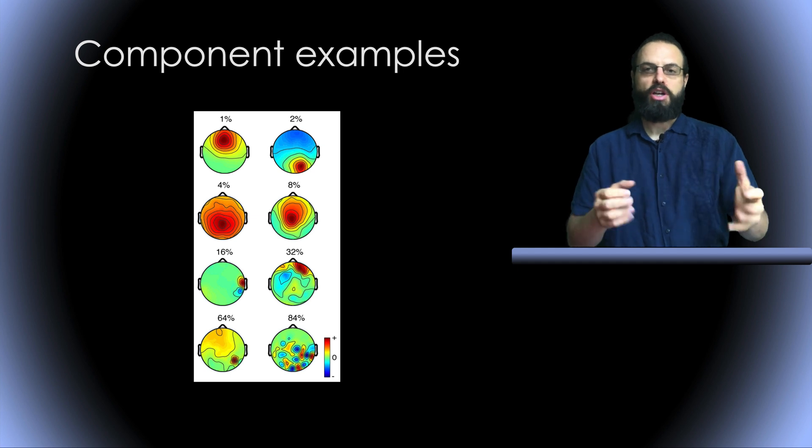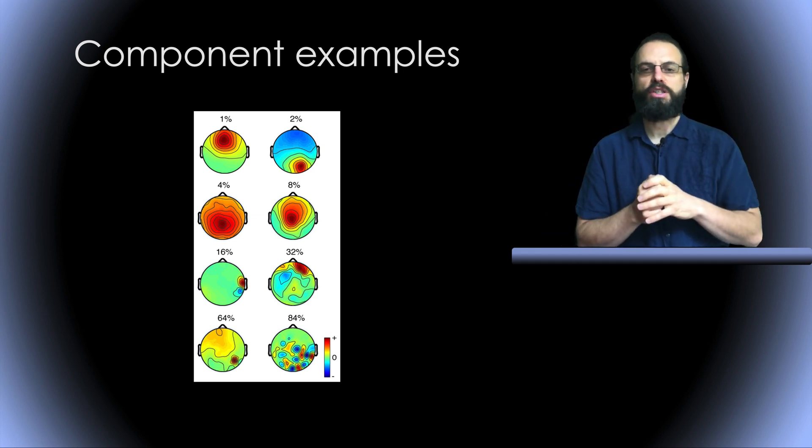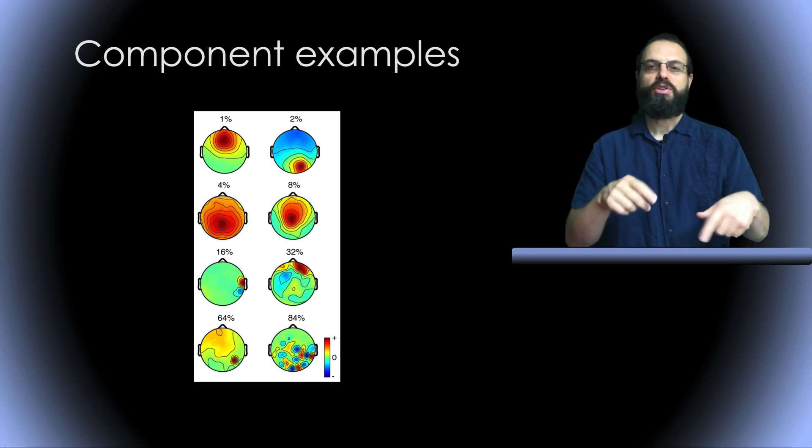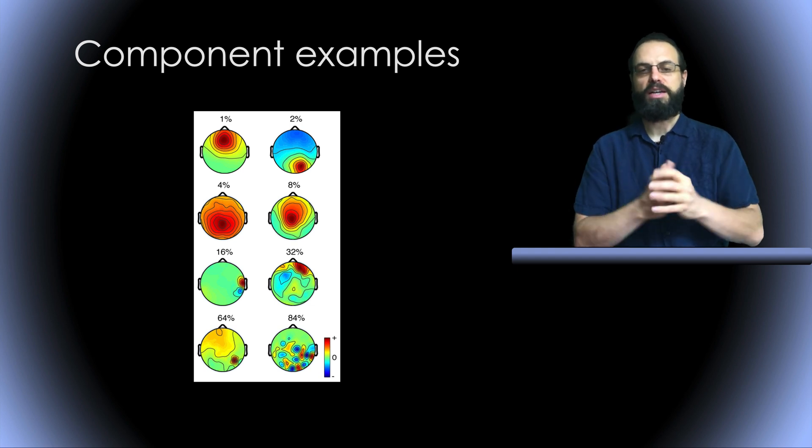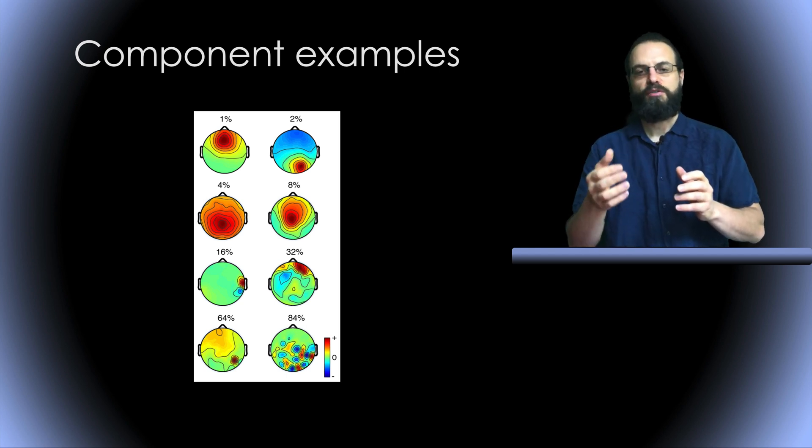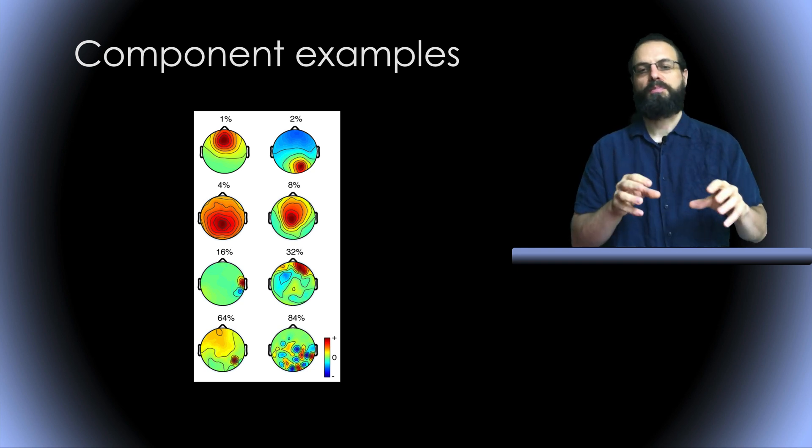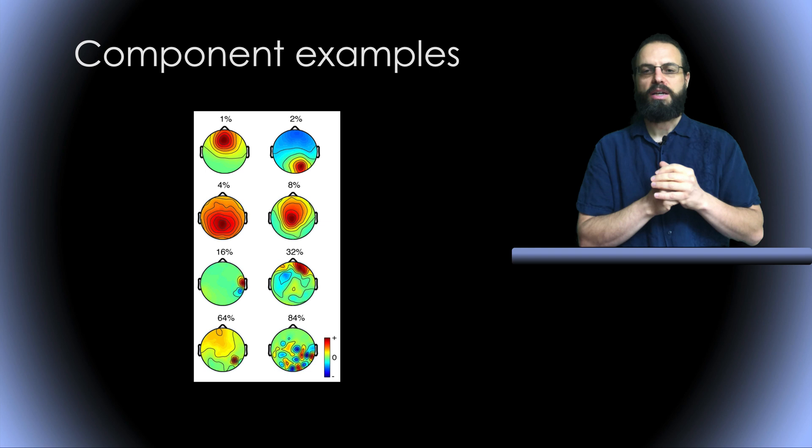These are examples of what we call good and bad components. At the top, the scalp topography has 1% residual variance, meaning that the single equivalent dipole models 99% of the scalp topography for these components. Then we have 1 with 2%, 4%, 8%, 16%, 32%, 64%, 84%. As we reach 84%, the component scalp topography looks like a checkerboard, so they can't really be modeled using a single dipole. That's why the residual variance is very high.